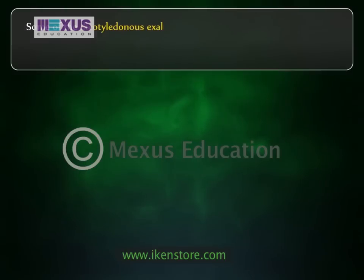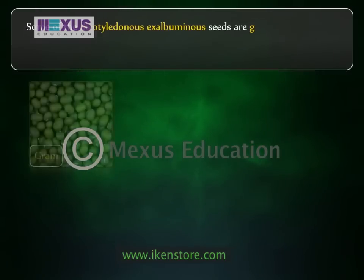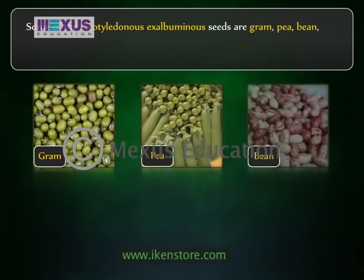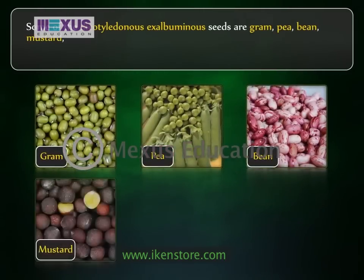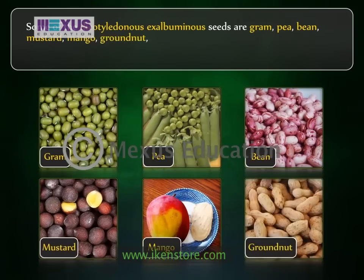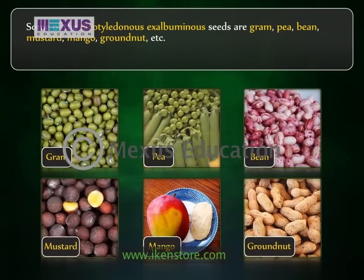Some of the dicotyledonous exalbuminous seeds include gram, pea, bean, mustard, mango, and groundnut.